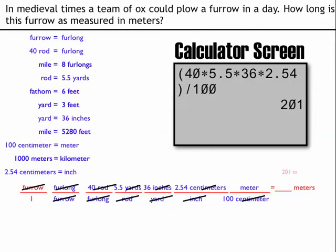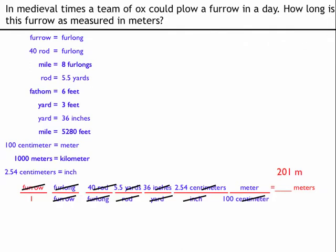On my calculator, it's going to look something like this. I'll use parentheses to put everything in the numerator. 40 times 5 and a half times 36 times 2.54 in parentheses. Divided by, and usually I put parentheses here, but since I only have one number in the denominator of my fraction down below, I'll just leave out the parentheses. So all that's divided by 100 to give me the answer of 201. So 201 meters is my answer.